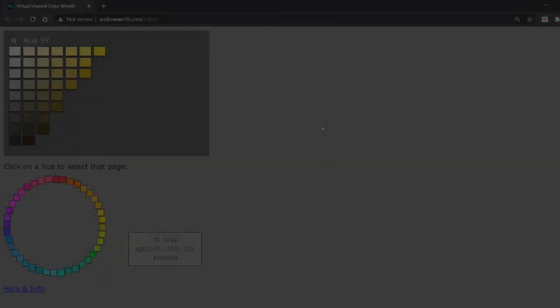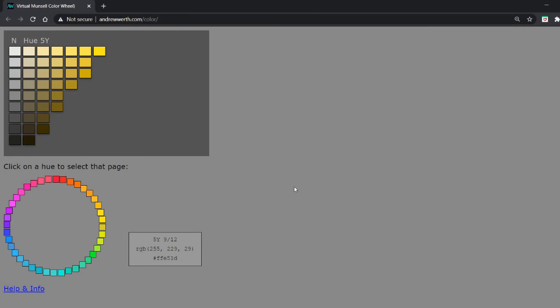Let's understand this using a website. The link is in the description below. When you click the link, you'll see this page. First, select the hue by clicking on one of the colors—here we'll click 5Y. Then select the value of 9 and chroma of 12. This gives us 5Y 9/12 along with its RGB code.